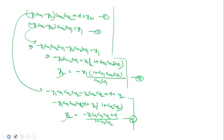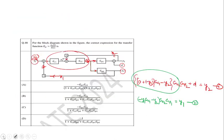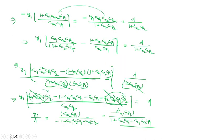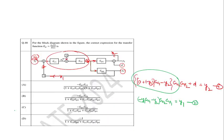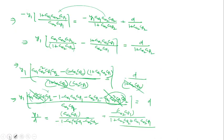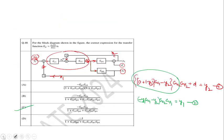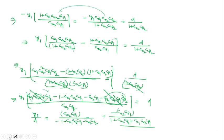So the final answer is minus GC2·GP1 / (1 + GC2·GP2 + GC1·GC2·GP1). Checking the options, this matches option C. So option C is correct. This is your answer. Thank you.